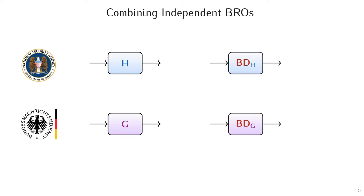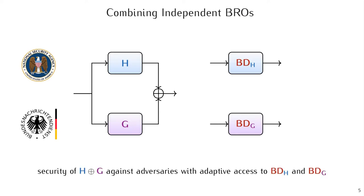The original paper included an analysis of the XOR combiner which simply computes H of X, XOR, G of X on any input X. There, the security of the XOR combiner was analyzed in a setting where adversaries have access to not just one of the backdoor oracles but actually to both of the backdoor oracles.